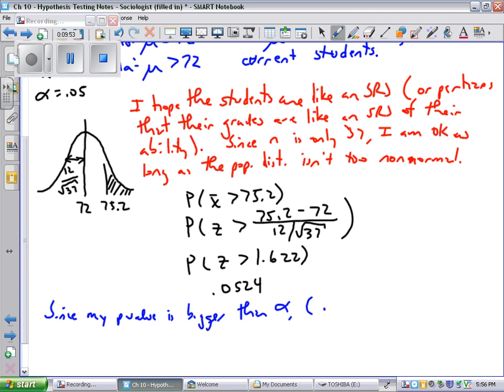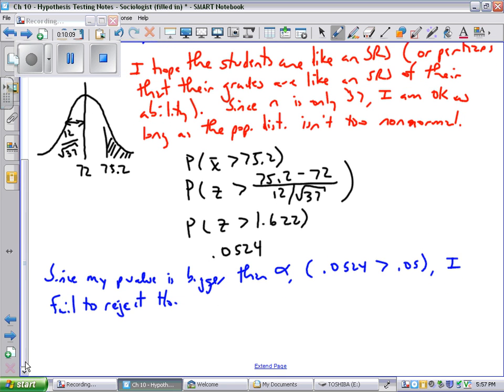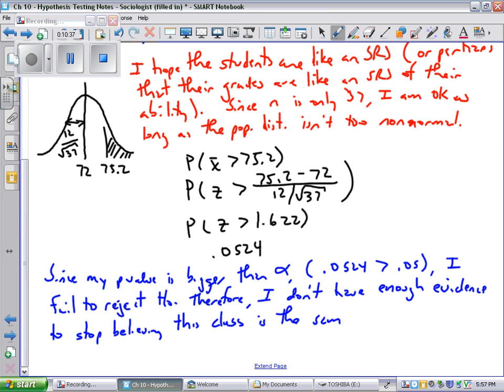In this case, my p-value is bigger than alpha. Since my p-value is bigger than alpha, and let's go ahead and put it on here, 0.0524 is bigger than 0.05, I fail to reject H0. I want to keep believing H0. Therefore, I do not have enough evidence to stop believing this class is the same as previous classes. Again, that doesn't mean that this class isn't superior. It just means that the evidence is insufficient for me to quit believing they're just like every other group.